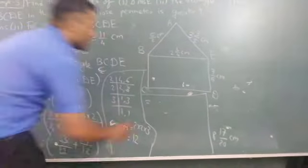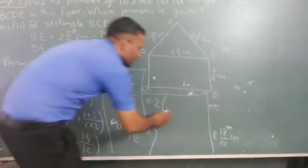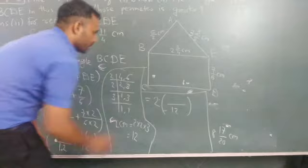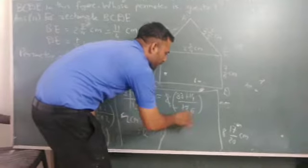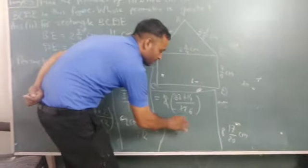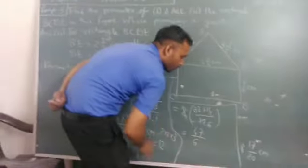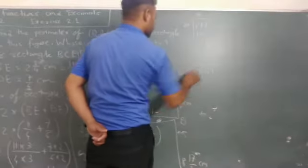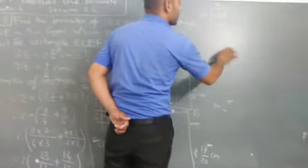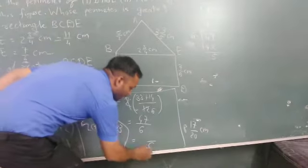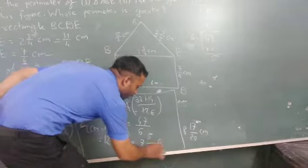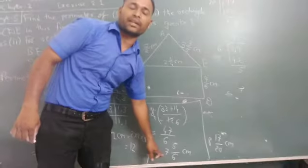So the answer is 2 times (33 plus 14) over 12, which is 2 times 47/12. So 2 times 47 is 94 over 12, which simplifies to 47/6. Dividing: 6 times 7 is 42, remainder is 5. So the perimeter of rectangle BCDE is 7 and 5/6 centimeters.